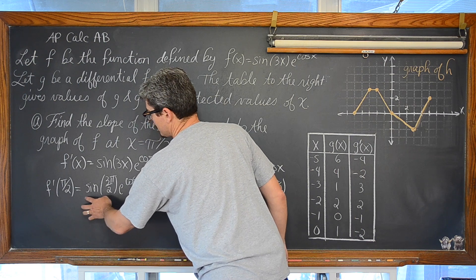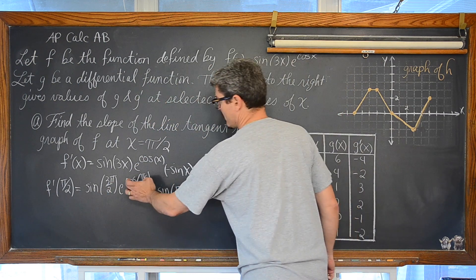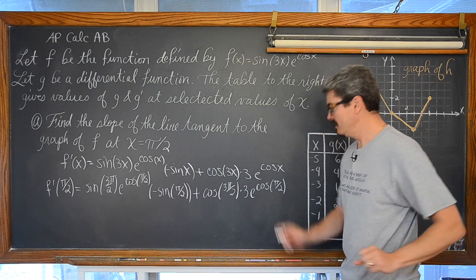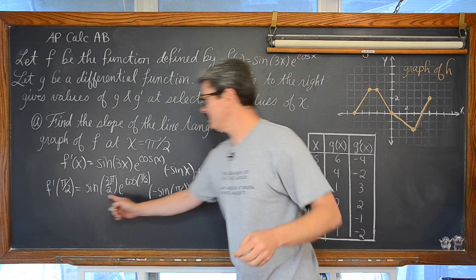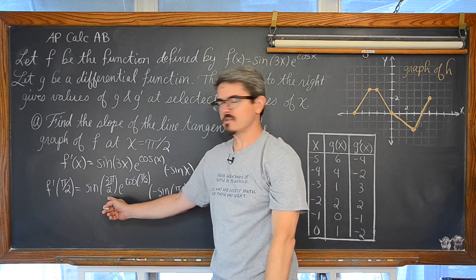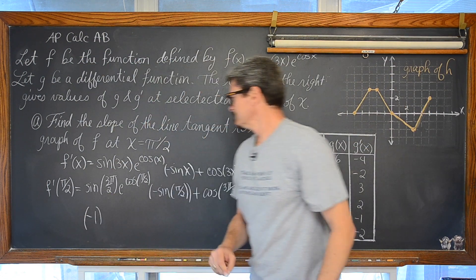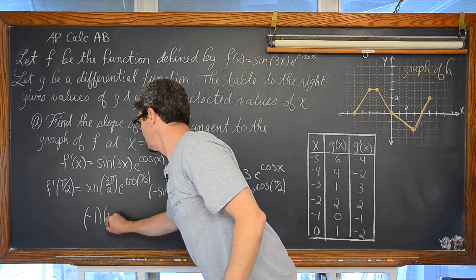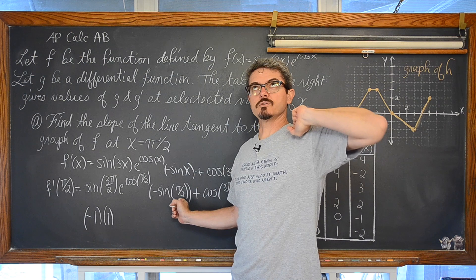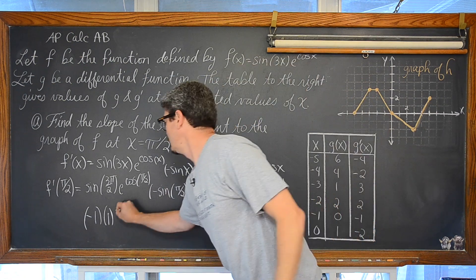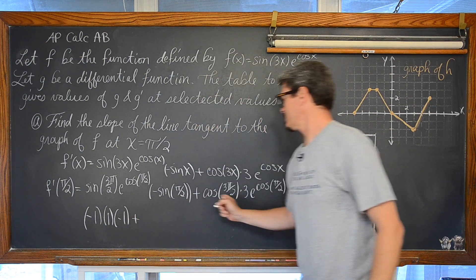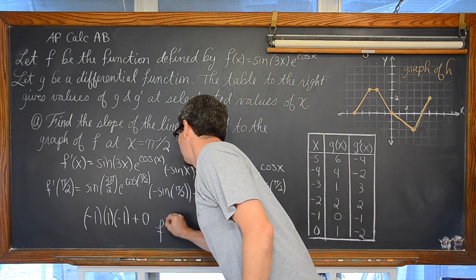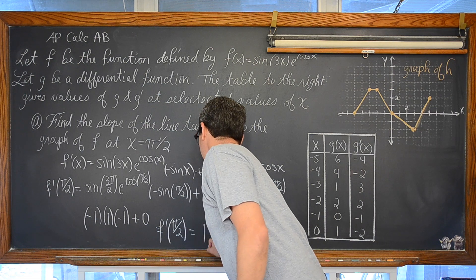f'(π/2) = sin(3π/2) · e^(cos(π/2)) · (-sin(π/2)) + cos(3π/2) · 3 · e^(cos(π/2)). sin(3π/2) = -1. cos(π/2) = 0, so e^0 = 1. sin(π/2) = 1 but it is negative. cos(3π/2) = 0, so that entire second term is 0. Therefore f'(π/2) = (-1)(1)(-1) + 0 = 1.